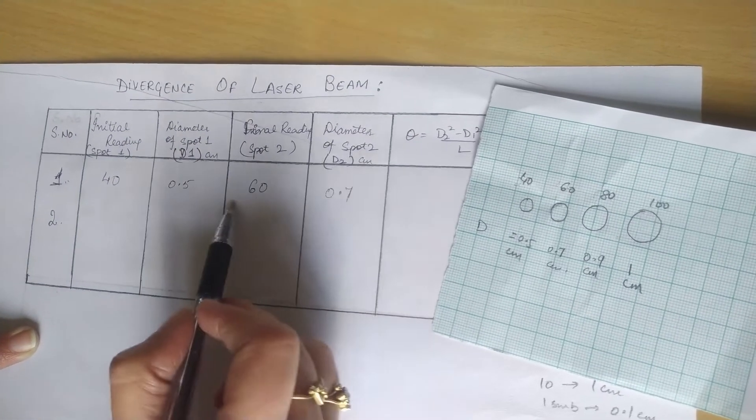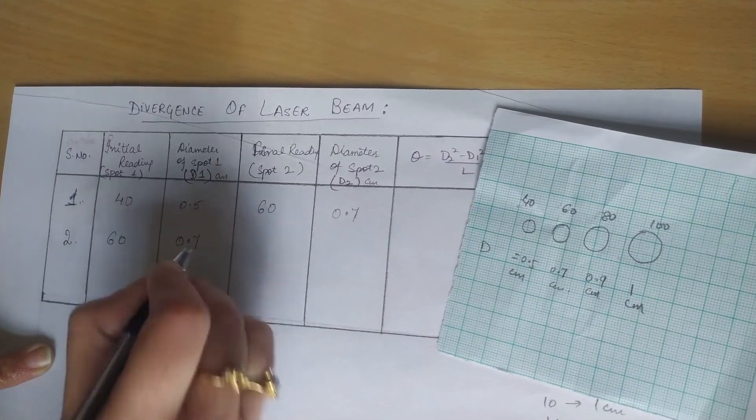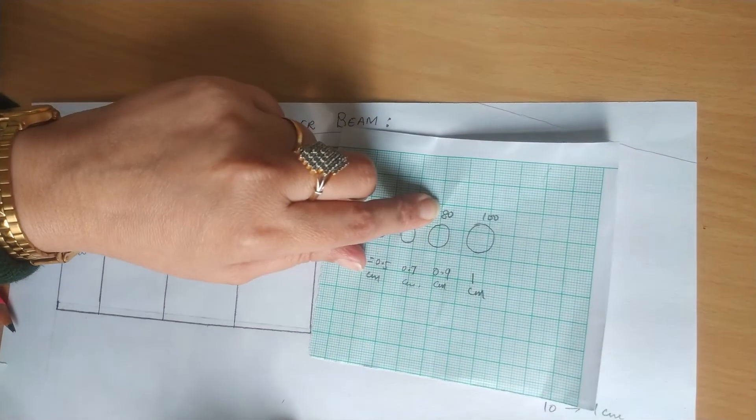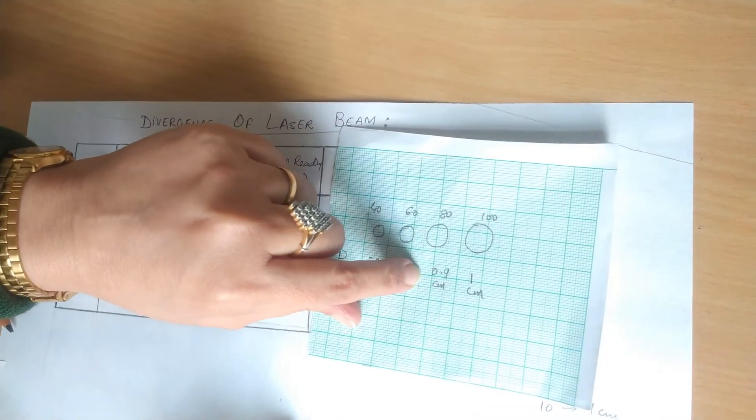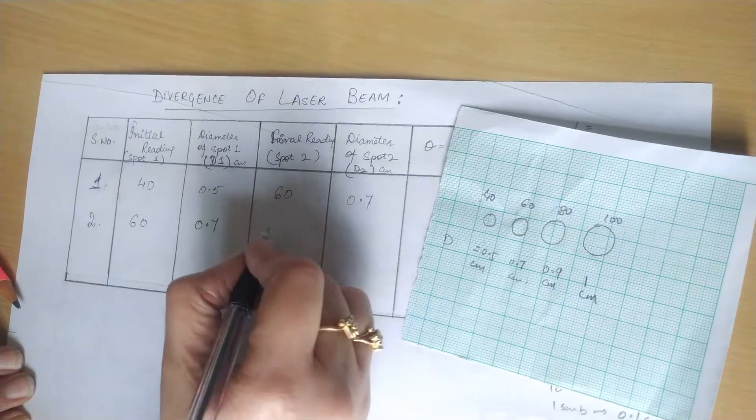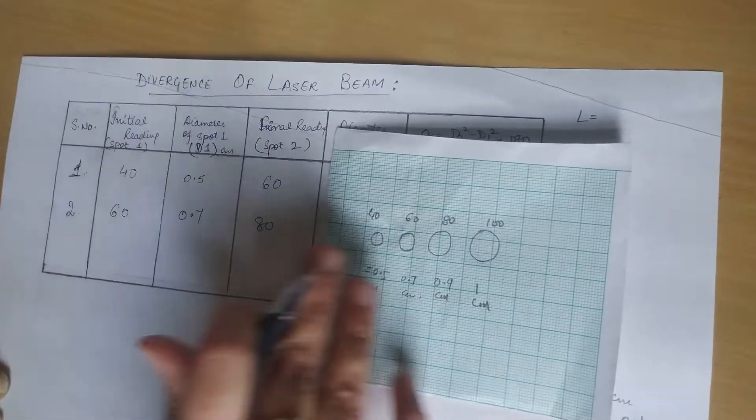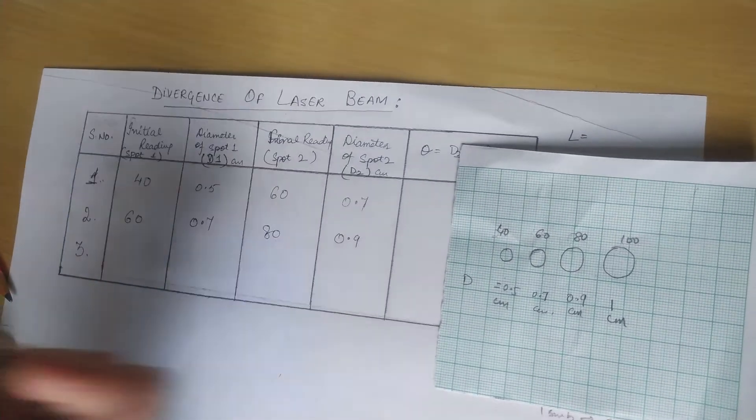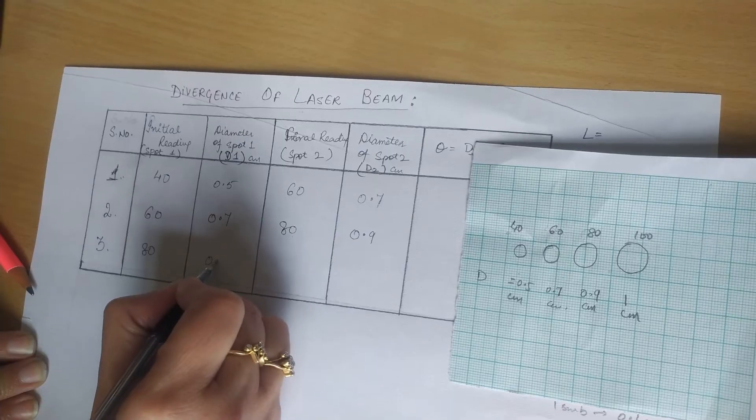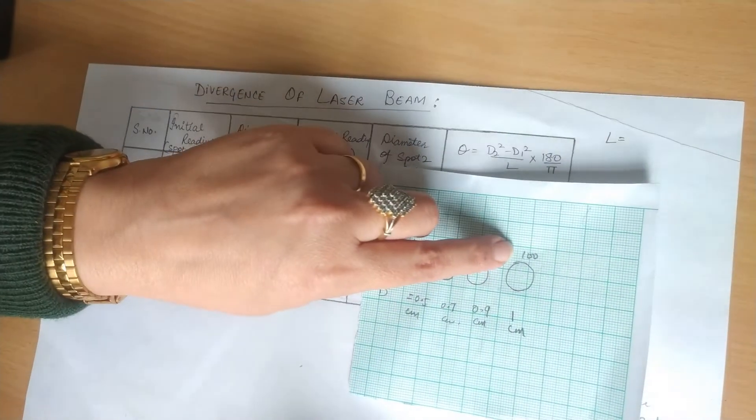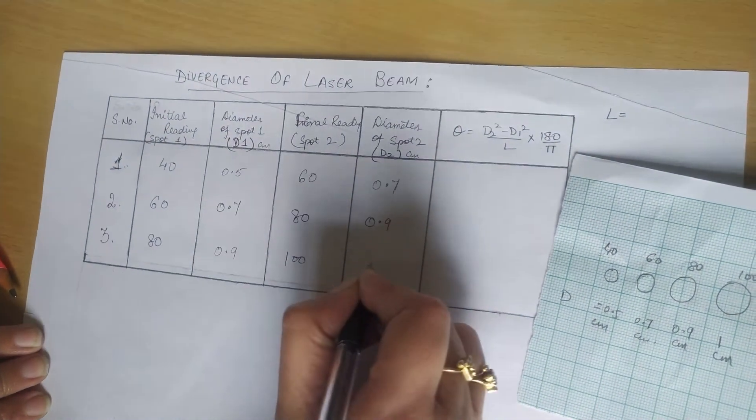Number 2: we can take this final reading as the initial reading of next set. So 60, 0.7, and 80 - distance between source and slit is 80, and its diameter is 0.9 cm. Now this final reading becomes the initial reading of third set: 80 and 0.9 cm. And here we have 100 cm.